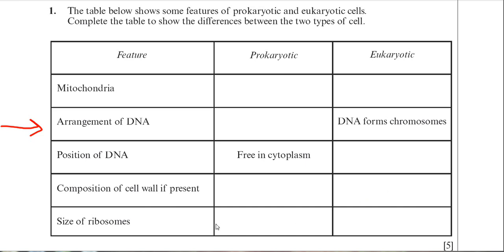The size of the ribosomes: ribosomes are small in the prokaryote and large in the eukaryote. And that completes the table. There were a few awkward ones in there, but hopefully that's full marks.